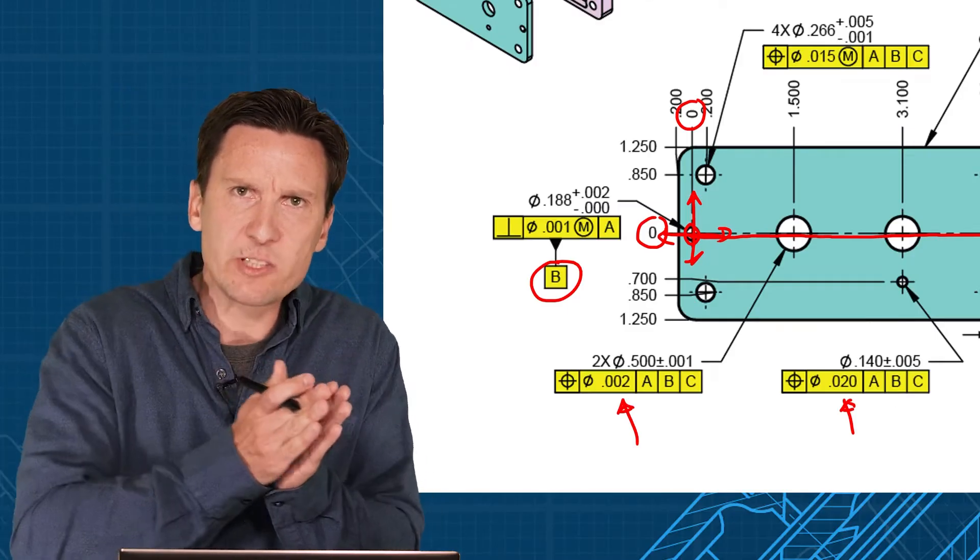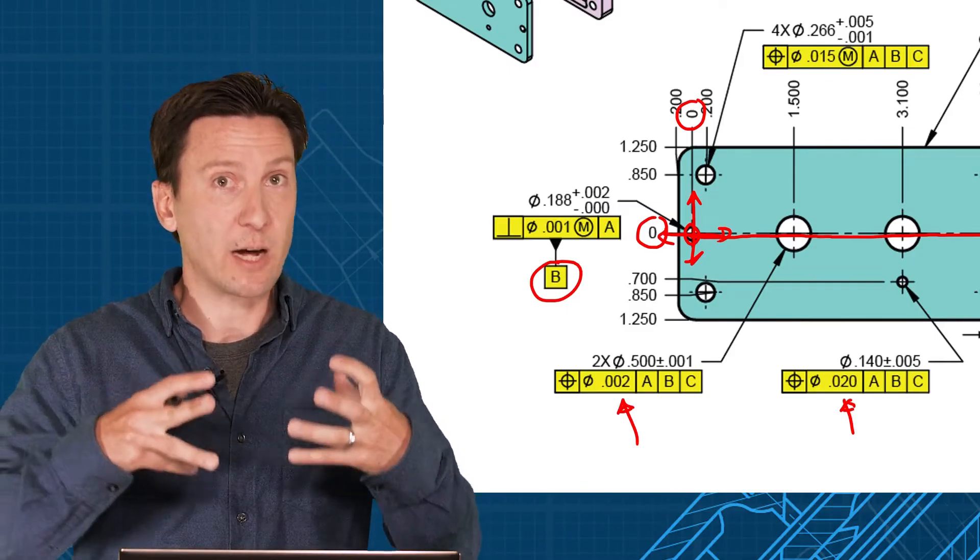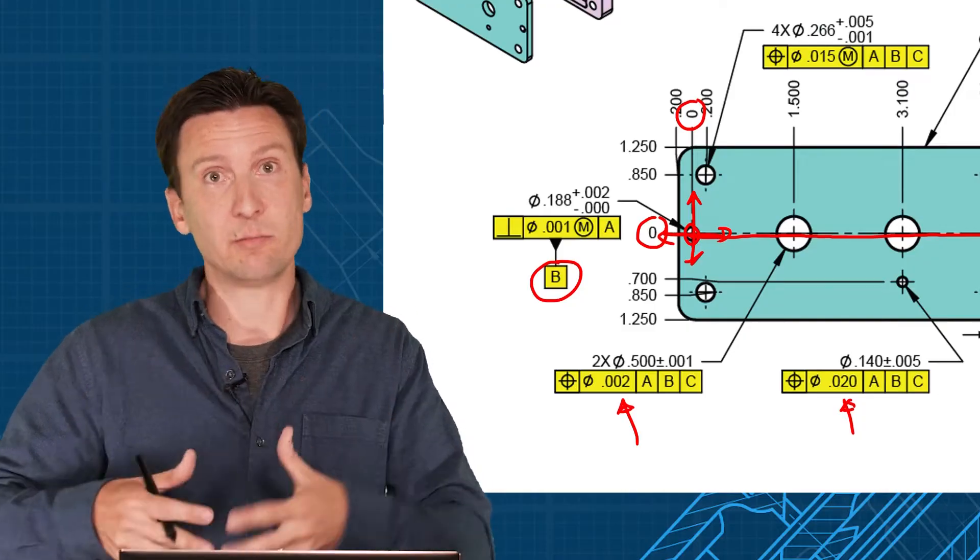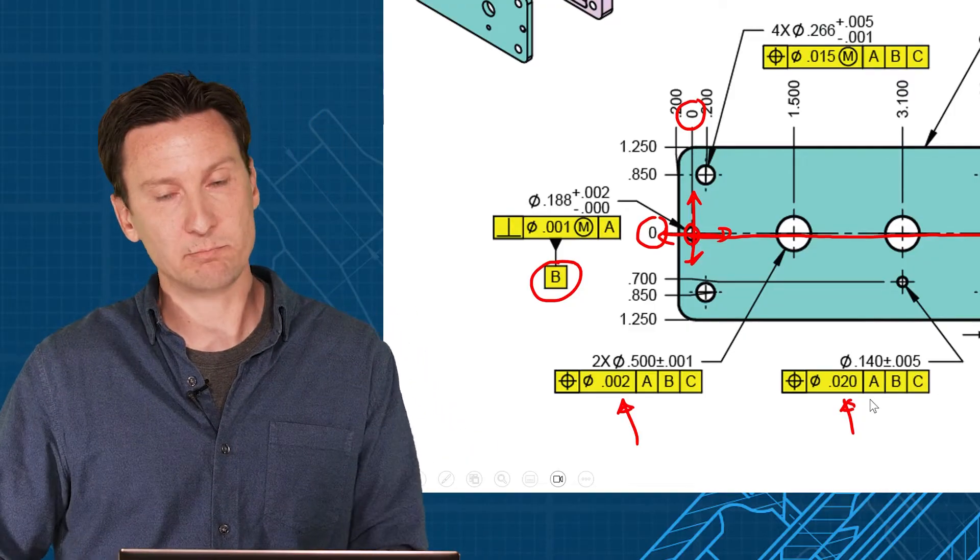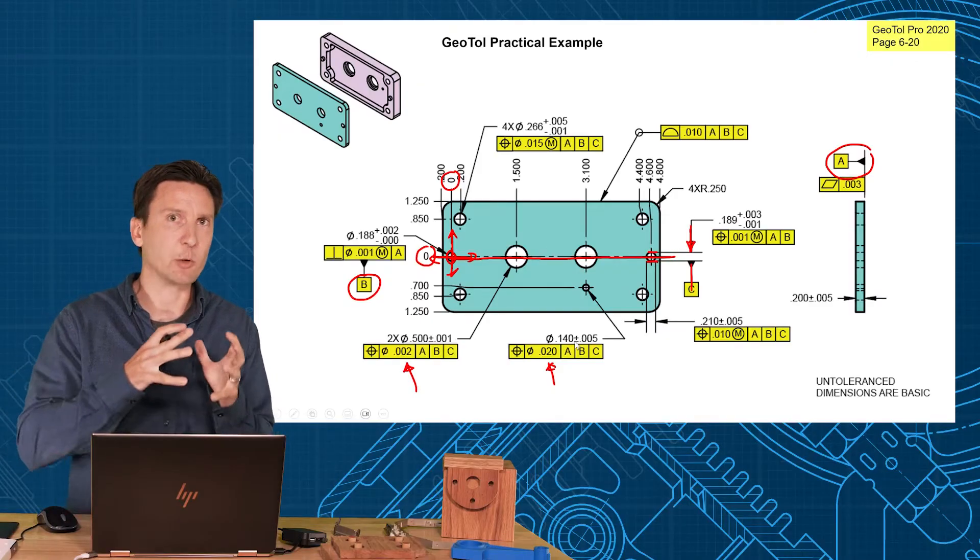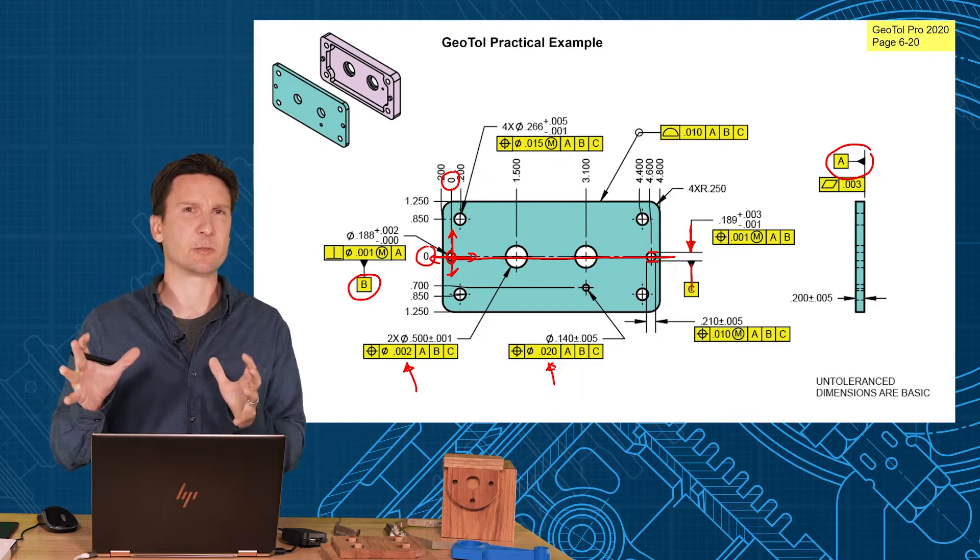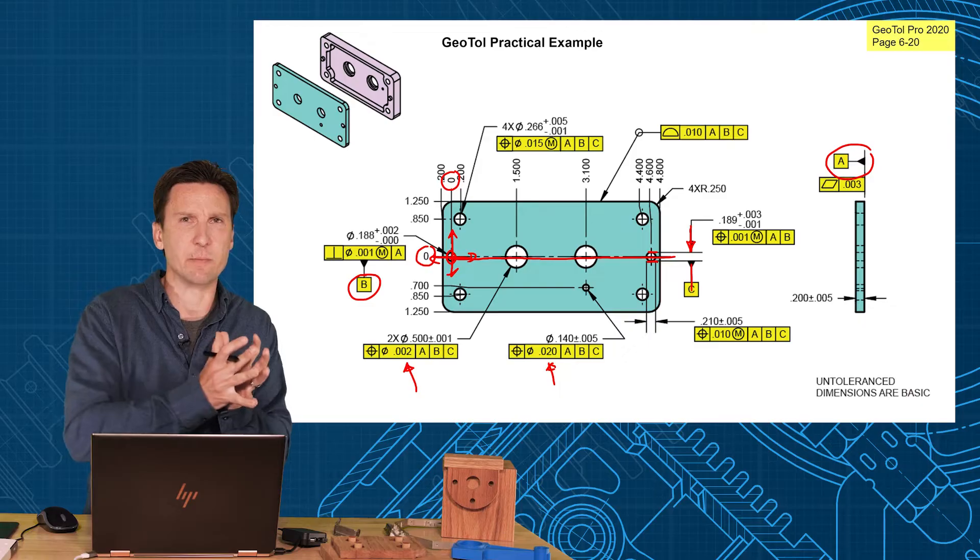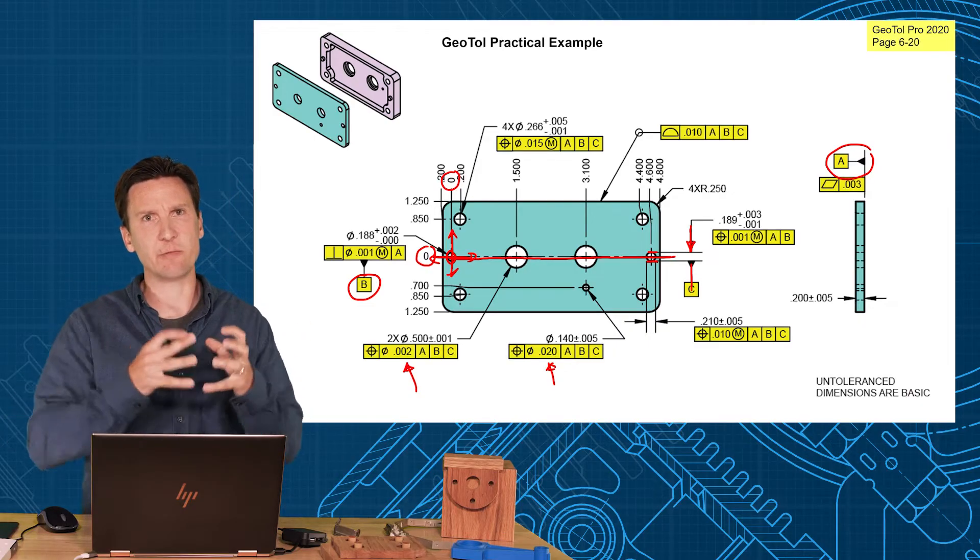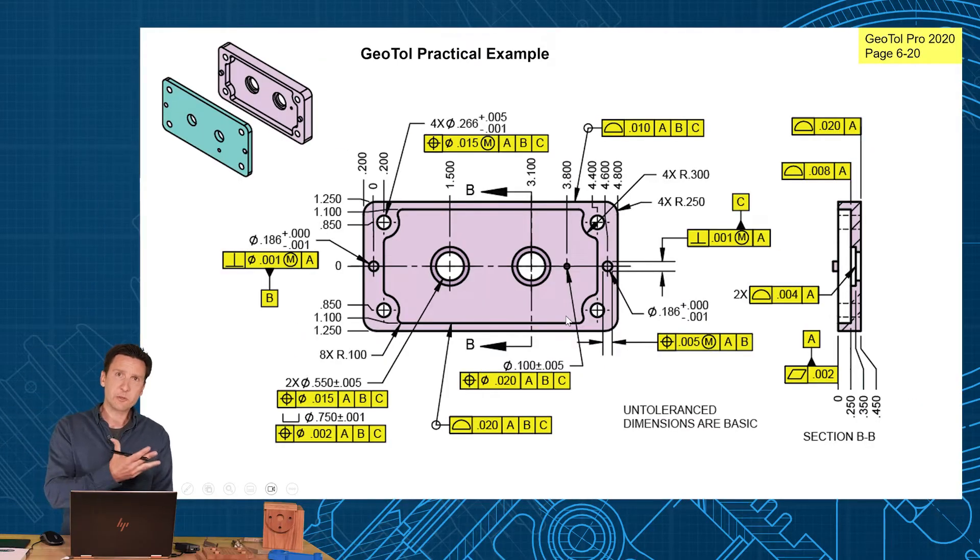So now you know how the part fits. How does it align? That's your ABC. Tight tolerances, position of 2, that's important. Loose tolerances, position within 20, not so important. So function is driving what you want these datum features to be. I'm not really thinking about manufacturing at this point. I'm thinking about how does the part fit? How does it mount? What relationships are needed for it to work properly?